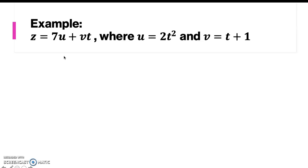Let's try to find the total derivative from this example. Here, z equals 7u plus vt, where u itself equals 2t squared, and v equals t plus 1. Here we can say that we have z as a function of u, v, and t, but u and v are both a function of t.